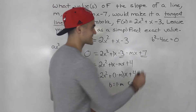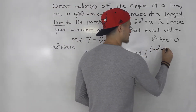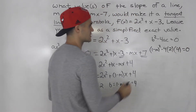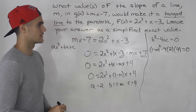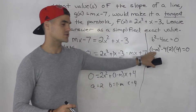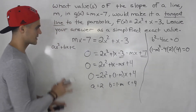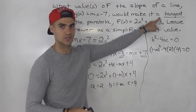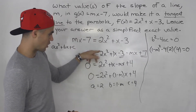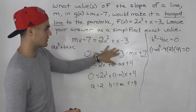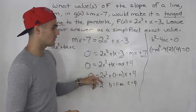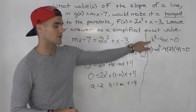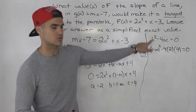So b² would be (1 − m)², giving us (1 − m)² − 4 × 2 × 4 = 0. Now notice you have an equation to solve with one variable — you're just solving for m. We took the line, made it equal to the quadratic, we know they intersect at one point because we're making the line tangent to the parabola. When we bring everything to one side, we know there's only one solution, so the discriminant equals 0. We take the a, b, and c values, plug into the discriminant, and solve for m.